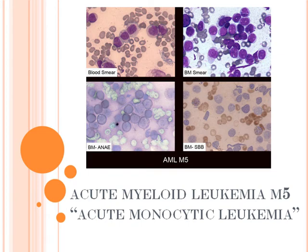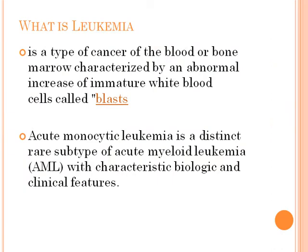Today our presentation is about acute myeloid leukemia M5, also known as acute monocytic leukemia. Leukemia in general is a type of cancer of the blood or bone marrow characterized by an abnormal increase of immature white blood cells called blasts. Acute monocytic leukemia is a distinct rare subtype of acute myeloid leukemia.